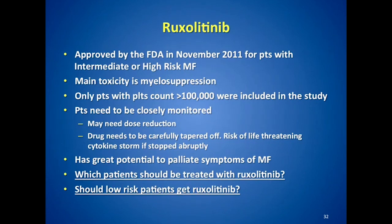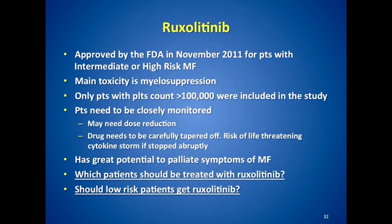Ruxolitinib was approved in November 2011. Its main toxicity is myelosuppression. It is approved for patients with a platelet count greater than 50,000, though initial trial patients required counts over 100,000. Patients must be very closely monitored for dose reductions and toxicity. It has great potential to palliate symptoms, but whether low-risk patients should receive ruxolitinib remains unknown.